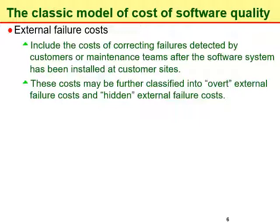Hidden external failure costs include, for example, damage from reduced sales to customers suffering from high rates of software failure, severe reduction of sales motivated by the firm's damaging reputation, and increased investment in sales promotion to counter the effects of past software failure. Reduced prospects to win a tender, or the need to underprice the product to prevent competitors from winning tenders, are also hidden costs. In most cases, the extent of hidden costs is much greater than that of the overt costs.